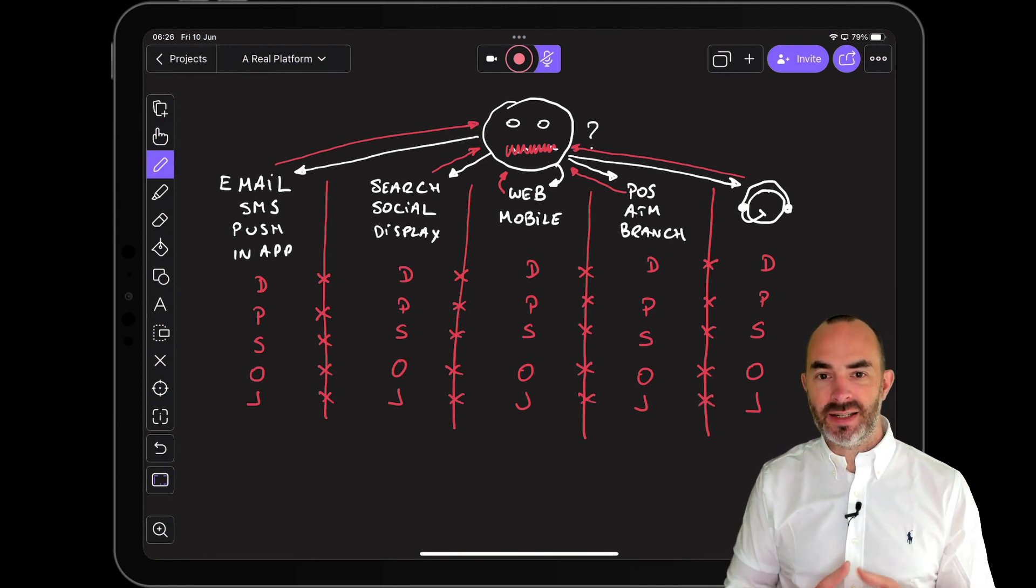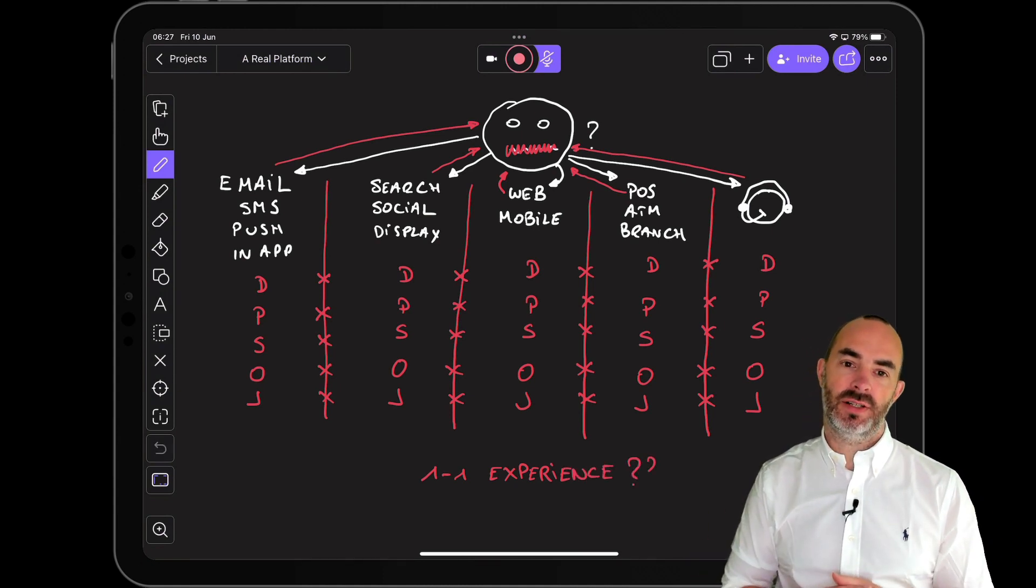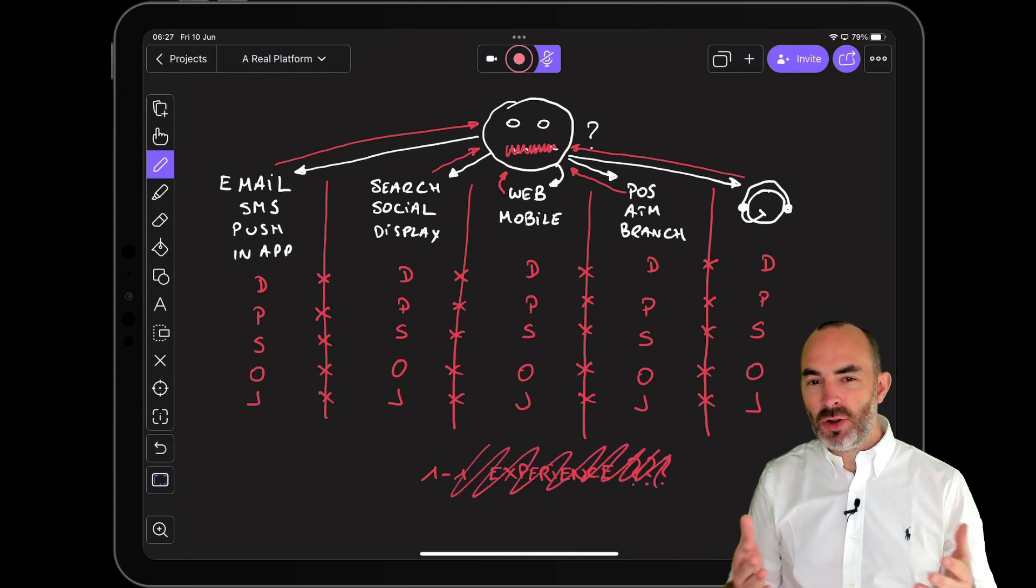Offers and journeys are defined in point solutions, and again, are very different from one application to another. So how can you talk about personalization in that context? Designing and delivering one-to-one experiences that are real-time, omnichannel, consistent, and contextual is impossible.